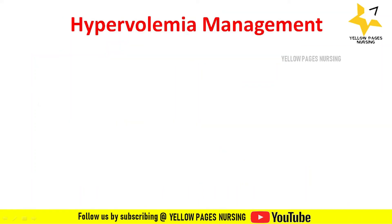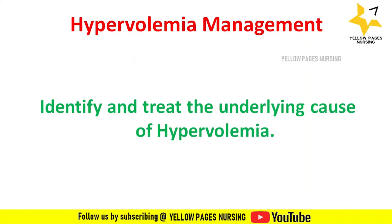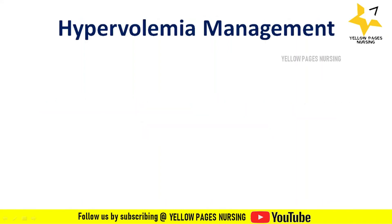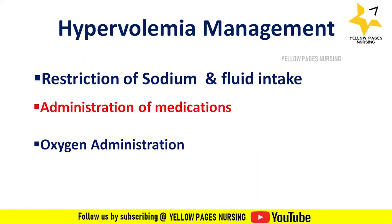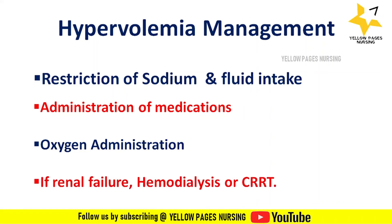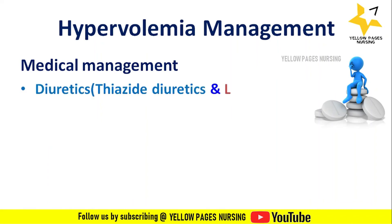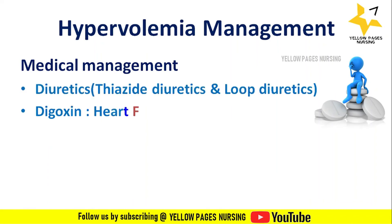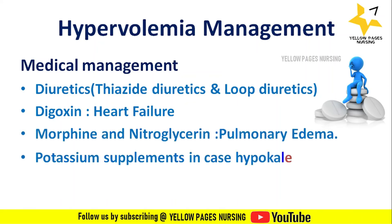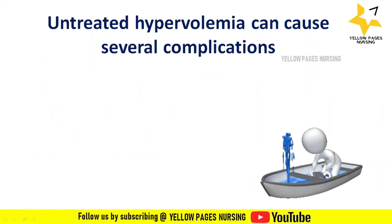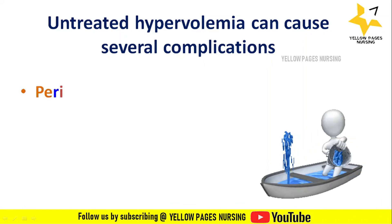Management of hypervolemia: identify and treat the underlying cause. Management includes restriction of sodium and fluid intake, administration of medications, and oxygen administration. If renal failure is present, hemodialysis or continuous renal replacement therapy is done. Medical management includes diuretics (thiazide and loop diuretics), digoxin for heart failure, morphine and nitroglycerin for pulmonary edema, and potassium supplements for hypokalemia. Untreated hypervolemia can cause complications like pericarditis, heart failure, delayed wound healing, tissue breakdown, and decreased bowel function.